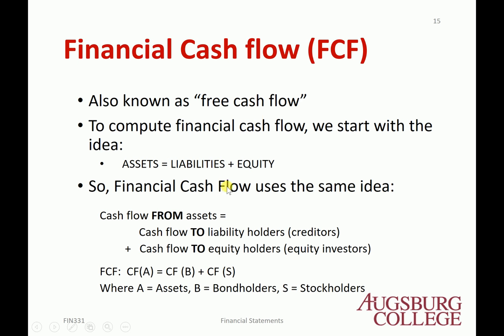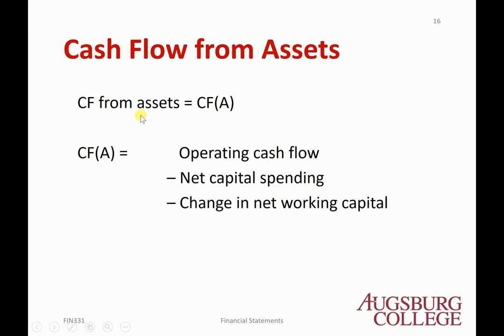Now, cash flow from assets is the cash flow generated by utilizing the assets. There are three parts in terms of the characteristics of the cash flow. The first one is operating cash flow, which is cash flow from operations — doing business. Number two, net capital spending is about fixed asset changes. Third, the change in net working capital is about the change in current assets.